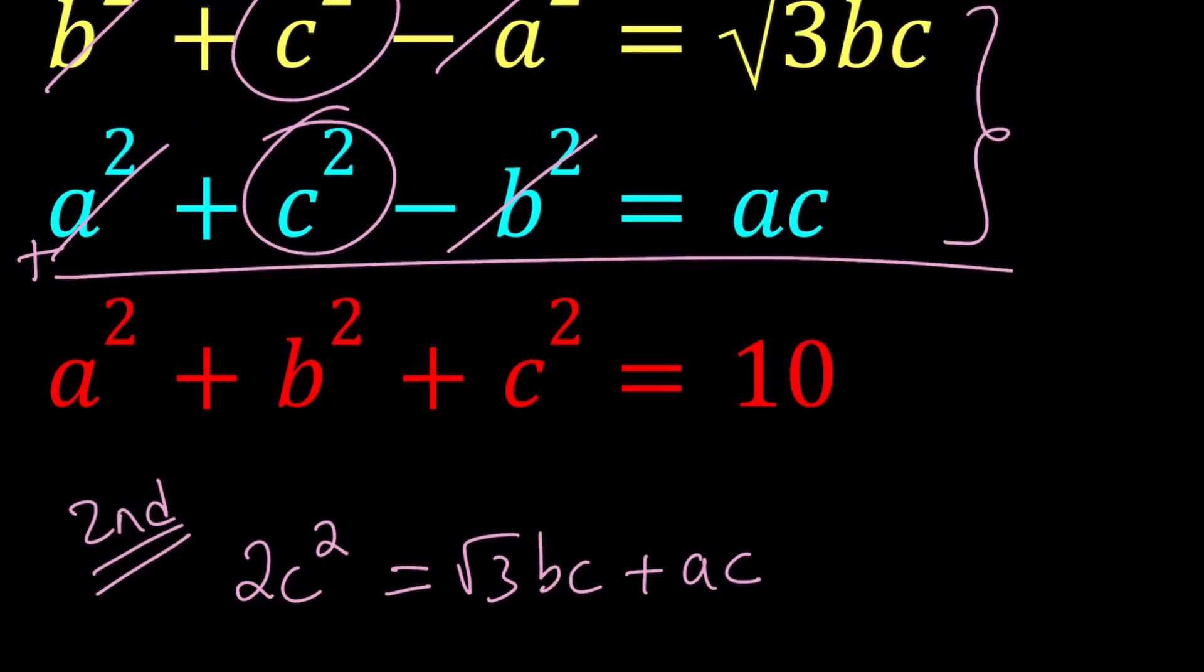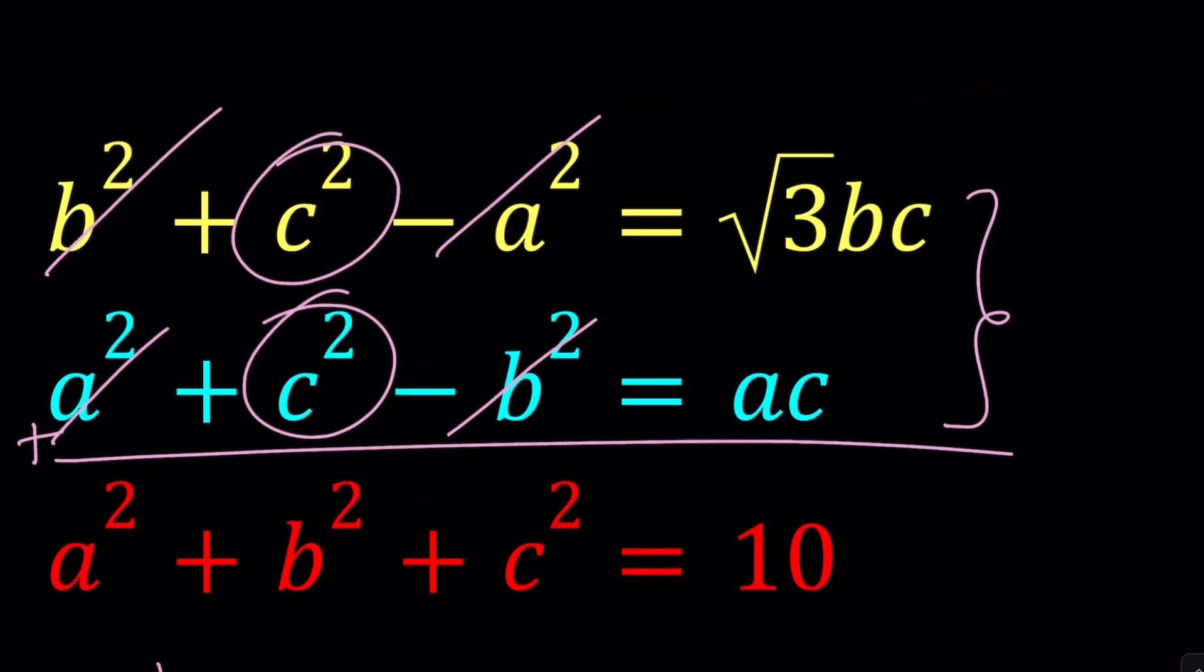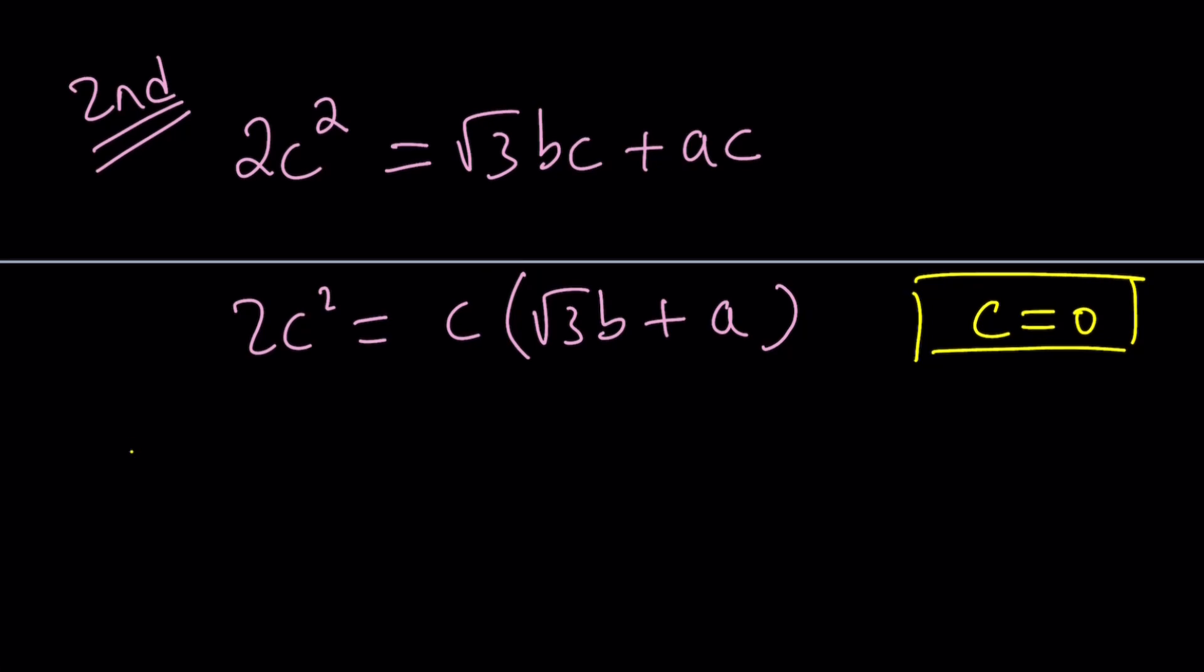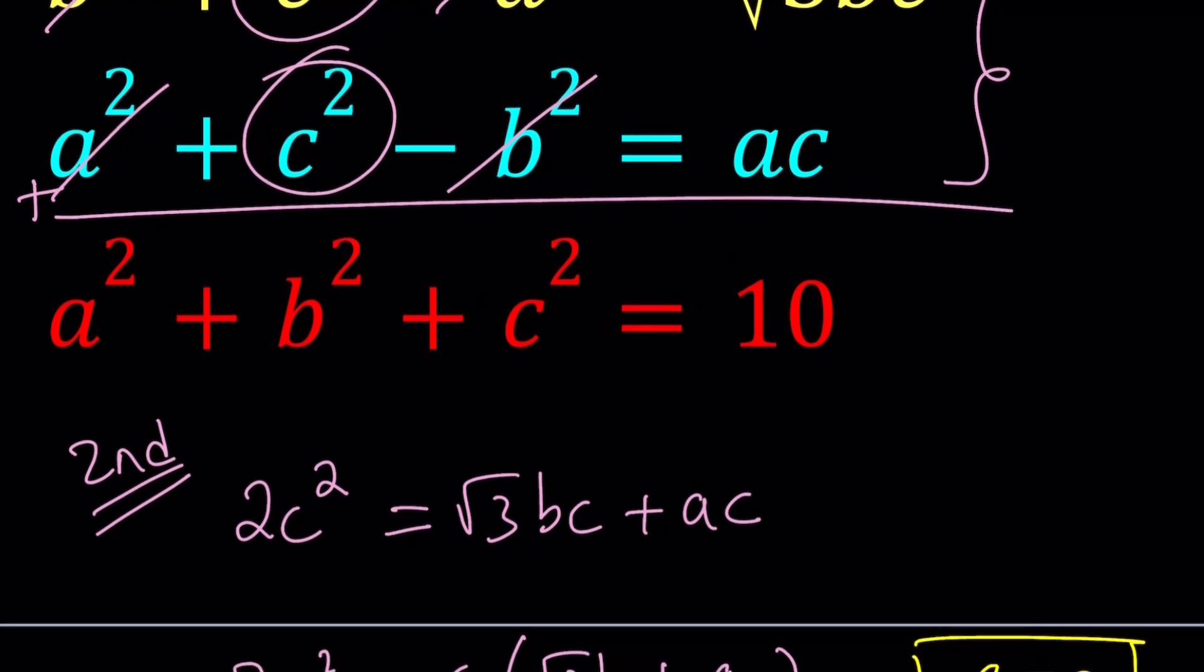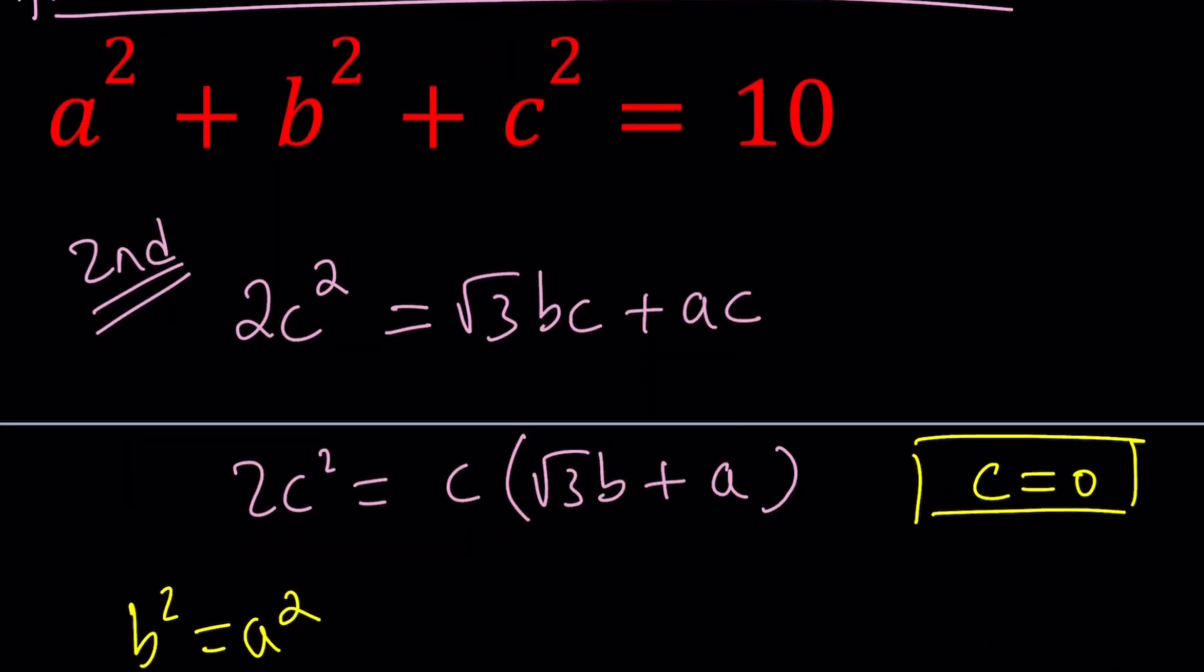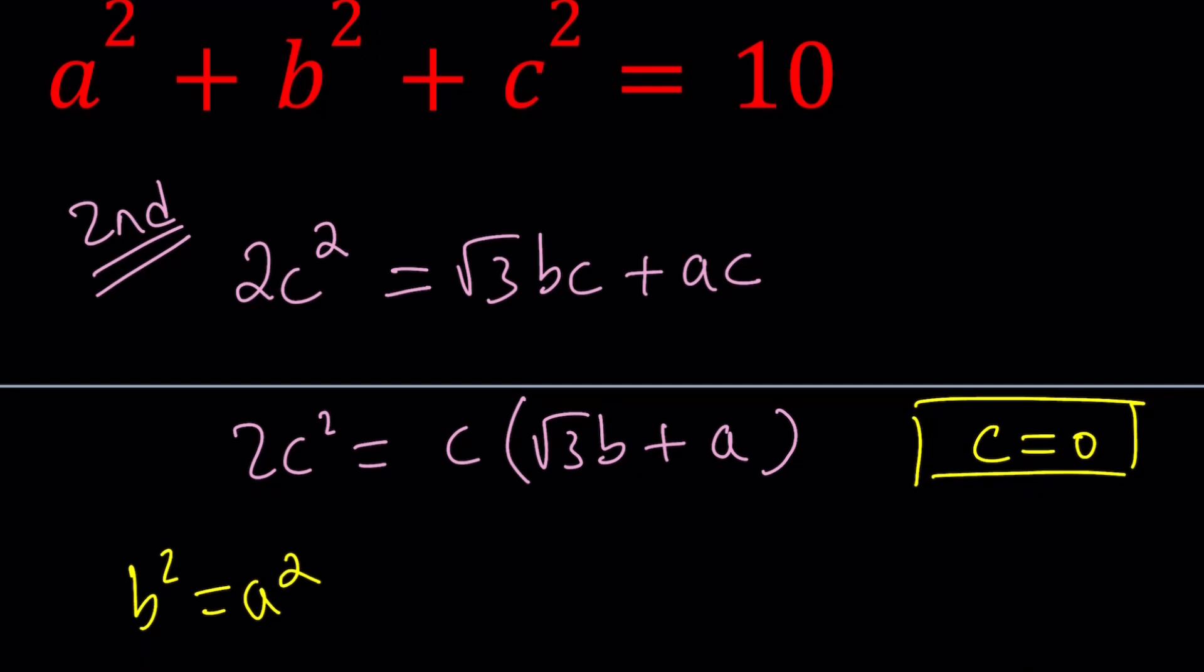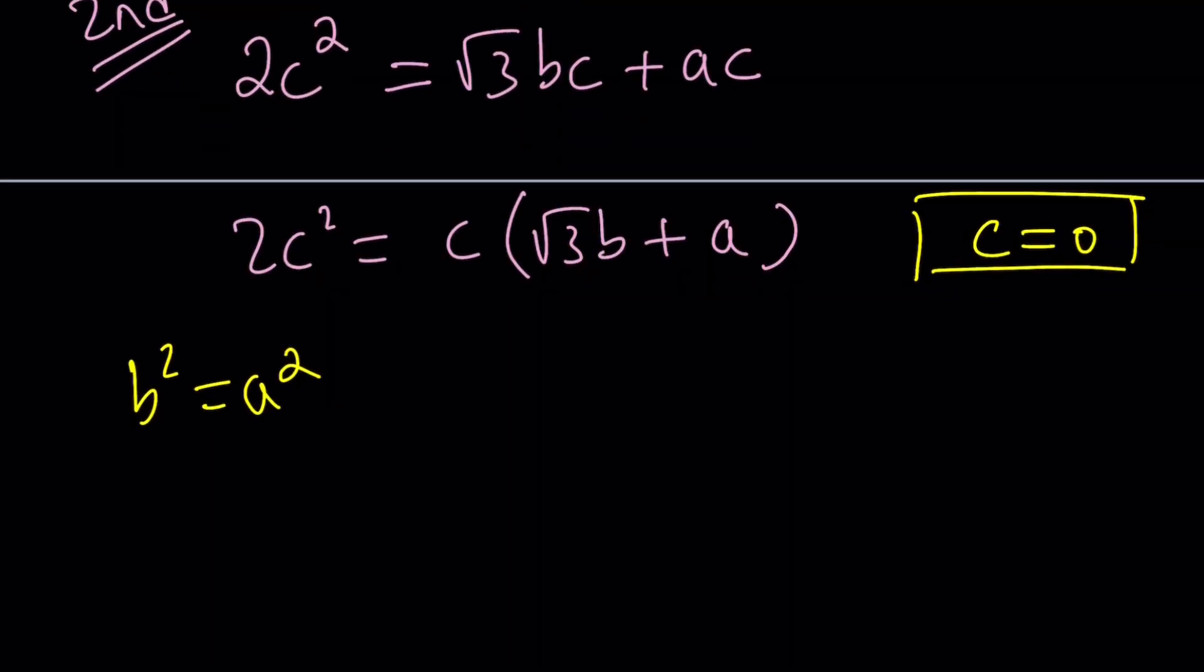If c is equal to 0, I plug it into the first one. I get b² - a² = 0, which means b² = a². That's the first conclusion. From the second equation, if c is 0, I'm also getting a² - b² = 0. Same thing. And on the third equation, this is important, I'm getting a² + b² = 10. That's the beauty.